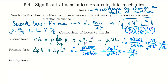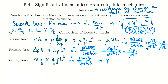Gravity is another very important force. The gravity force is M·g, which is proportional to g·rho·L³ — using density times length cubed to get units of mass. So the gravity force is g·rho·L³. Comparing to inertia gives G·L over V², and we remember that grouping came up in our earlier non-dimensionalization of the equations. That G·L/V² grouping indicates how important gravity will be to whatever problem we're solving.